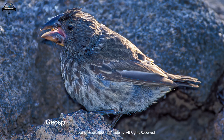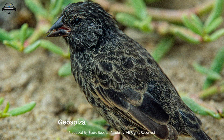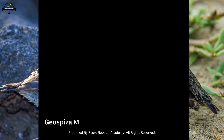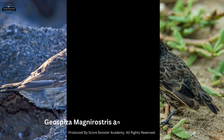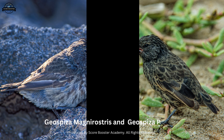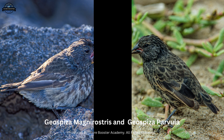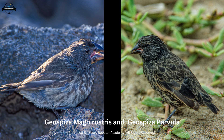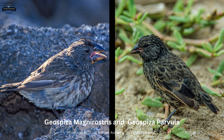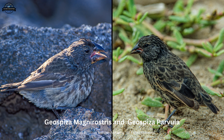For instance, the large ground finch Geospiza magnirostris has a robust seed-crushing beak, while the small tree finch Geospiza parvula has a slender, insect-probing beak. The morphological differences in their beaks reflect adaptations to different ecological niches and food sources, illustrating how variations in physical traits can contribute to the classification of species based on morphological characteristics.